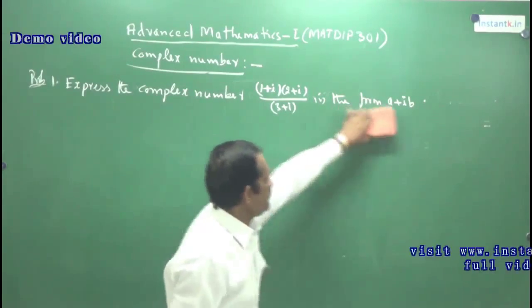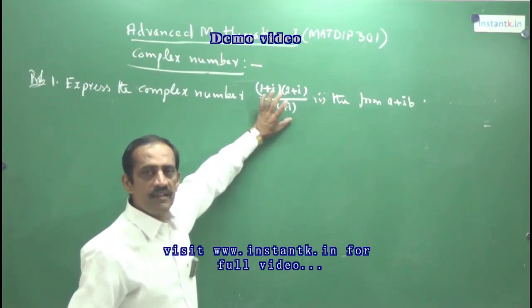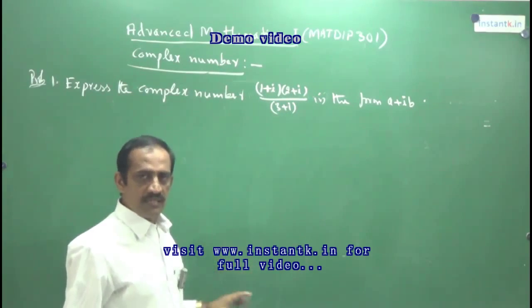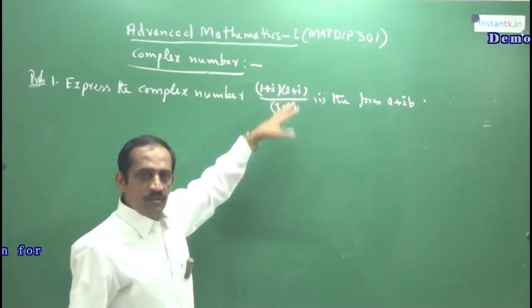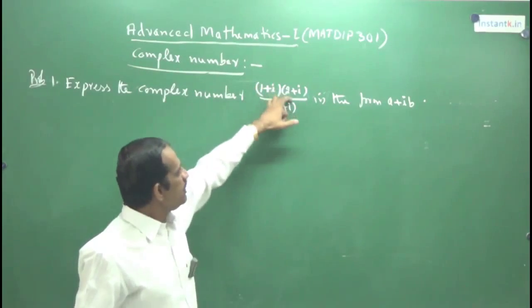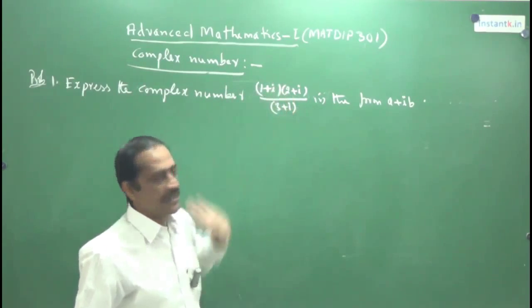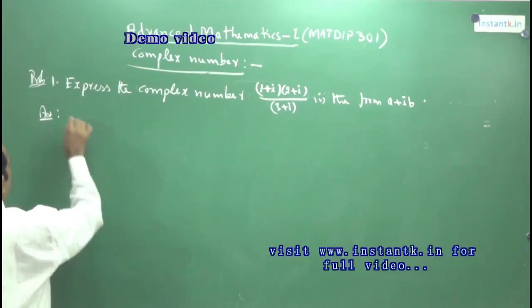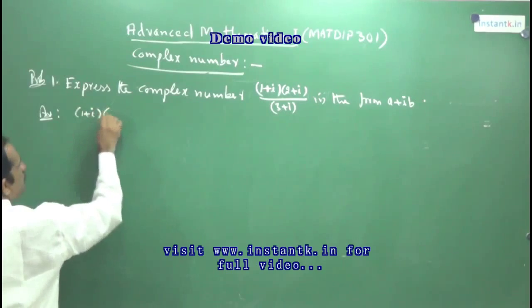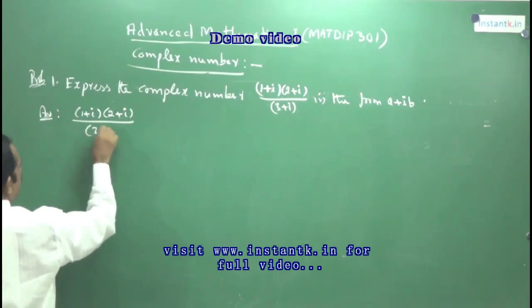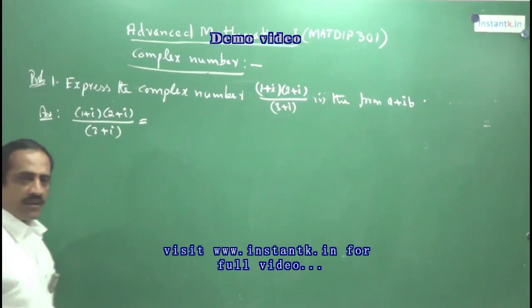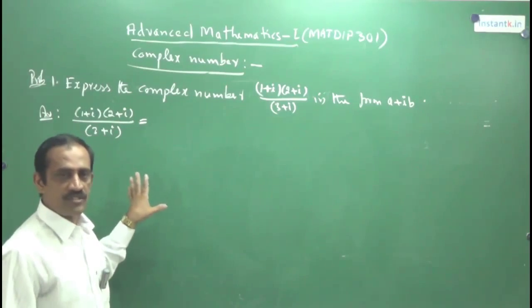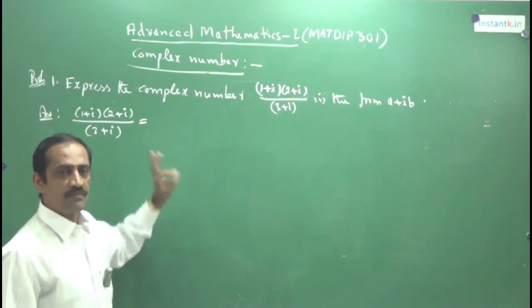When a problem of this type is given, you have to avoid the complex denominator — the denominator must be a purely real number. For that, you take the conjugate of the denominator and multiply the numerator and denominator by that. But since the numerator also has a product, first it is better to write the numerator in terms of x + iy by simple multiplication.